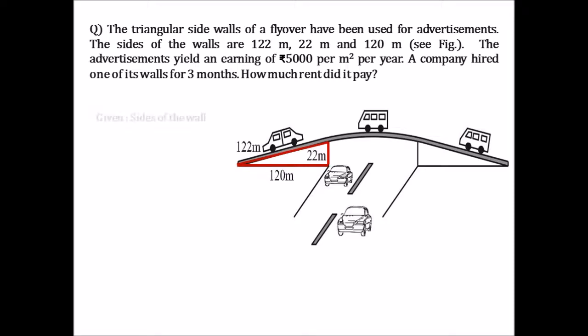Given to us are the sides of the walls: side A equals 122m, side B equals 22m, and side C equals 120m. Now we have the measurements of all three sides, so using them we will find the semi-perimeter of the triangle.